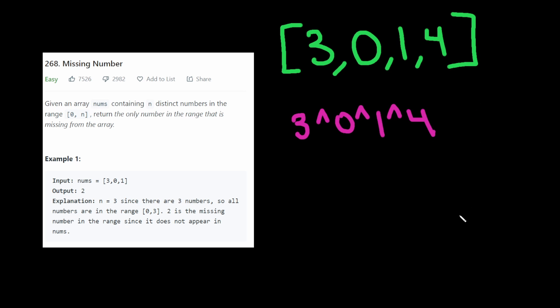However, there's an interesting idea here. What if we also XOR by the number of elements in this array plus 1? So basically 0, 1, 2, 3, 4. So let's just try that. So this XOR 0, XOR 1, XOR 2, XOR 3, XOR 4.